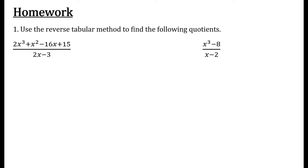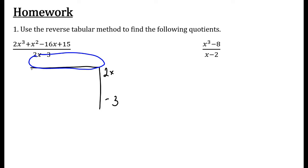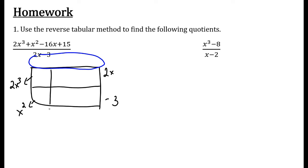In class during lesson two, we said we can use these tables that we use to multiply to help us divide. So we say 2x cubed plus x squared minus 16x plus 15, divided by 2x minus 3. What times 2x minus 3 gives me 2x cubed plus x squared minus 16x plus 15? My answer is going to be whatever ends up on top of this table. From that first diagonal, I get 2x cubed. From the next diagonal, I get x squared — I need to add a column. That next diagonal gives me negative 16x. The last diagonal gives me 15.